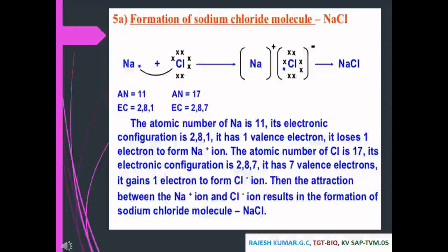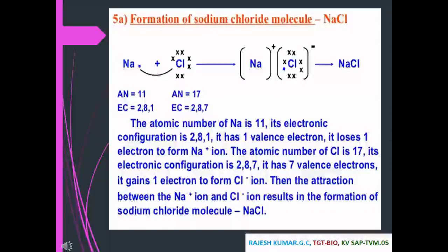The attraction between the Na⁺ ion and the Cl⁻ ion results in the formation of the sodium chloride molecule. Formation of magnesium chloride (MgCl₂): magnesium (atomic number 12, configuration 2,8,2) has two valence electrons and loses them to form Mg²⁺. Chlorine (atomic number 17, configuration 2,8,7) gains one electron to form Cl⁻. The attraction between Mg²⁺ and two chloride ions results in the formation of MgCl₂.